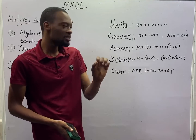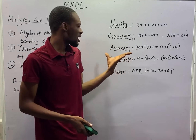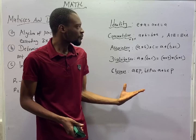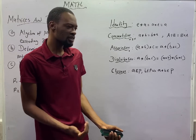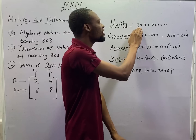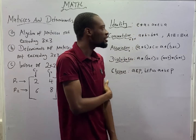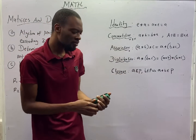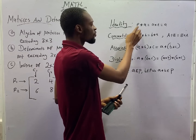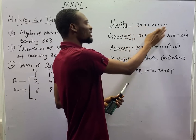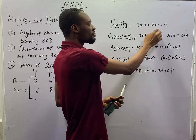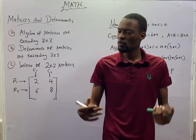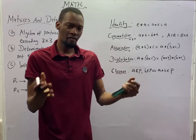The properties of binary operations are: identity property, commutative property, associative property, distributive property, and closure property. What JAMB expects you to know is: if e star a equals a star e equals a, what property is this? Here, e is the identity. When you operate a number with the identity, you get the number back. That is simply the identity property.